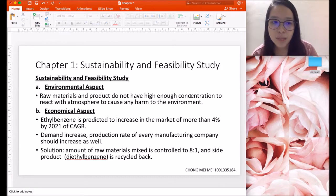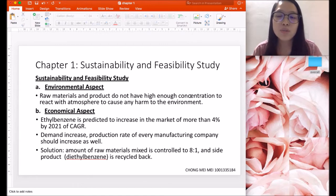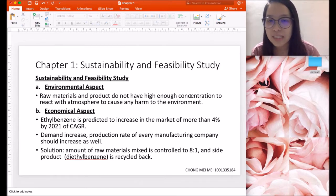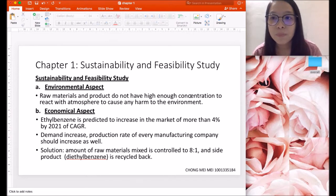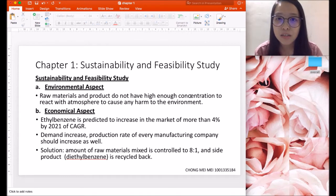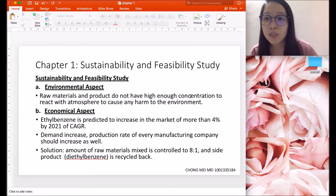In the economical aspect, ethyl benzene is predicted to increase in the market by 4% by 2021 according to compound annual growth rate. With increasing demand, manufacturers increase their production rate. By controlling the raw material ratio to 8 to 1, 8 being benzene and 1 being ethylene, they produce higher purity of ethyl benzene which generates higher profit. There's also a side product called diethylbenzene which can be recycled back to react with benzene to produce 2 molar of ethyl benzene.